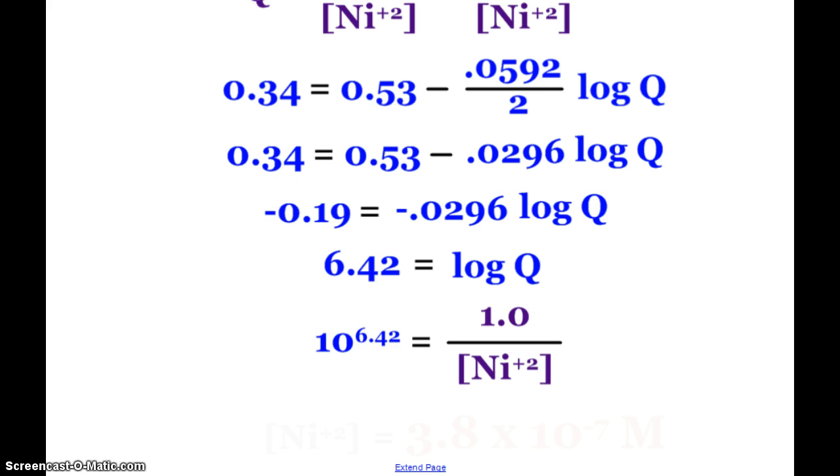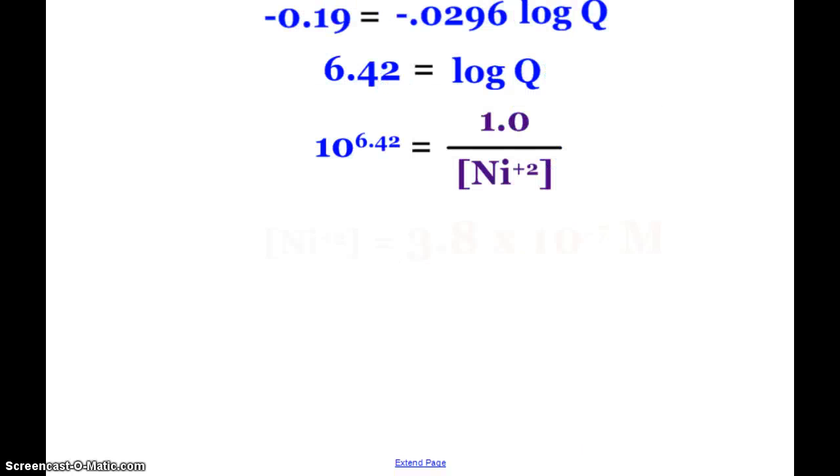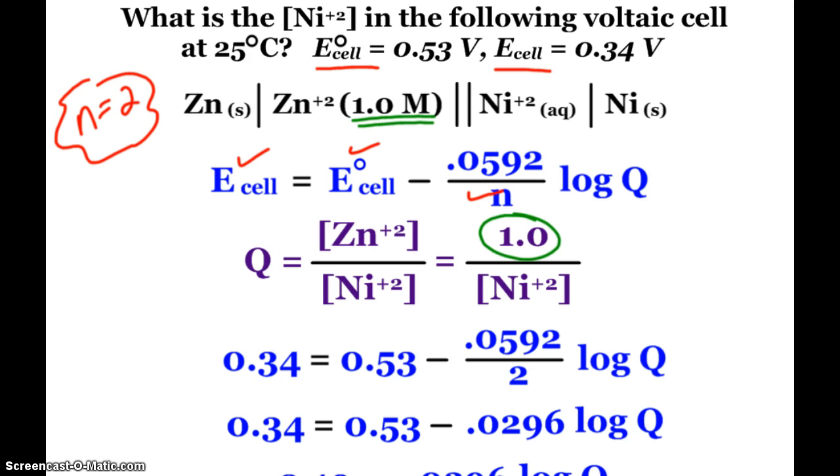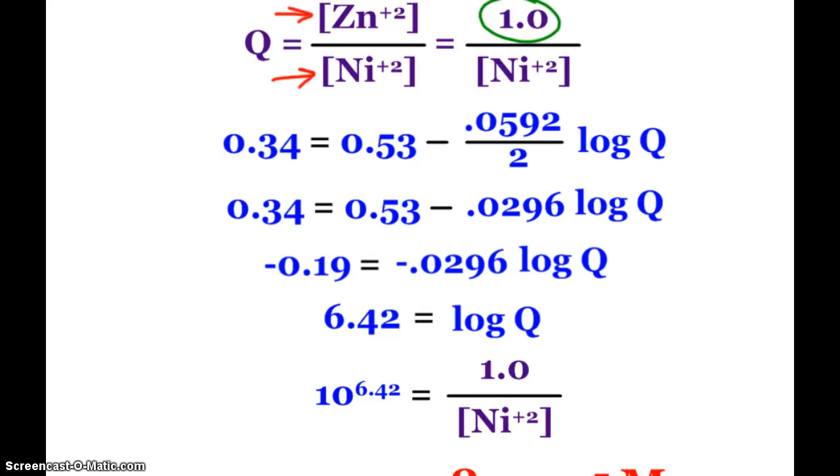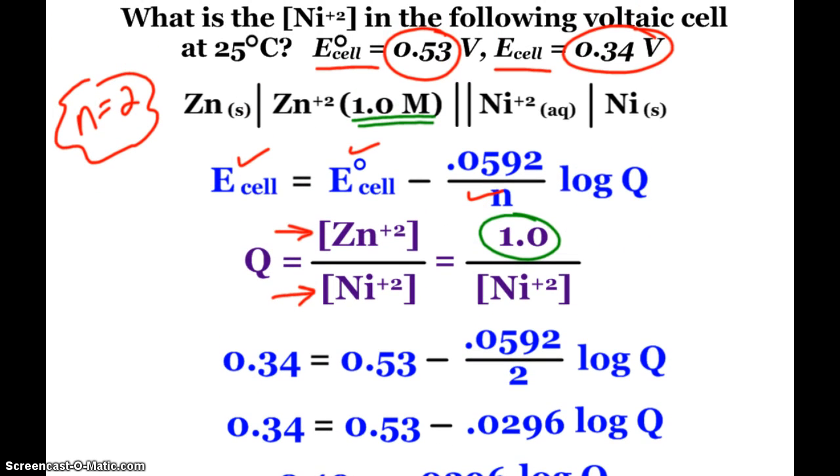So when I plug that into my calculator, 10 to the 6.42, and then I just simply have to take the reciprocal to end up with my nickel concentration. So I end up with 3.8 times 10 to the negative 7th molar. Does that make sense? The cell voltage has dropped, okay, from 0.53 to 0.34. That means my reaction has gone towards equilibrium. So that means I should have a greater concentration of products than reactants. So yes, my zinc is 1 molar. My nickel is 10 to the negative 7th, 3.8 times 10 to the negative 7th. So that does make sense.